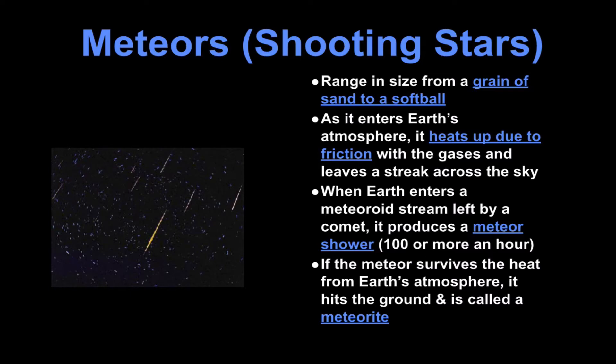When Earth enters the meteor stream left by a comet it produces a meteor shower. So that's all the debris left over from a comet coming in at a bunch of times basically one after the other.